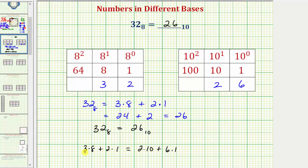Notice how when we simplify both sides, here we have 24 plus two which equals 26. And here we have 20 plus six which equals 26. Both of these numbers are in base 10.